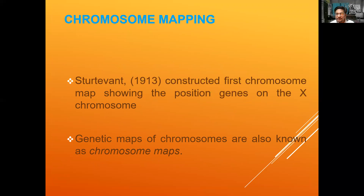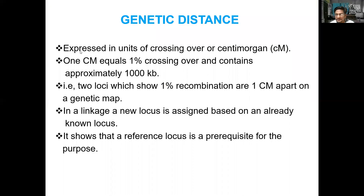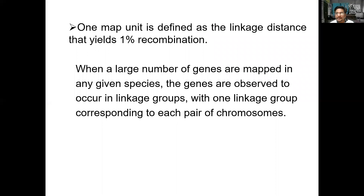Crossover data can be used for chromosome mapping, specifically genetic mapping. The genetic distance is represented in centimorgans — one percent crossover equals one centimorgan distance, which corresponds to approximately 1000 kb of DNA. Using the recombination frequency formula, we can find the distance between genes and determine their relative locations on the chromosome.